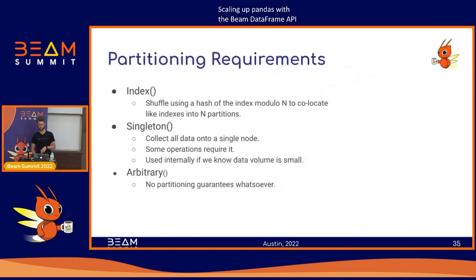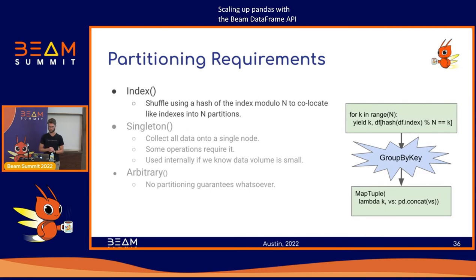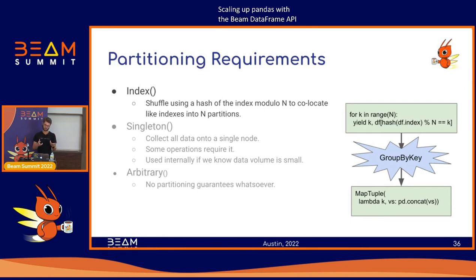There are three main types of partitioning requirements. The first is index partitioning, which indicates we need to partition the dataset by index — the implicit join key I was discussing. We do it by a hash of the index value modulo N, where N is the number of partitions. We try to do some smart scaling to figure out what N should be, but essentially we're doing hash-based partitioning to break up the dataset into N partitions and bring everything with the same index value onto the same node.